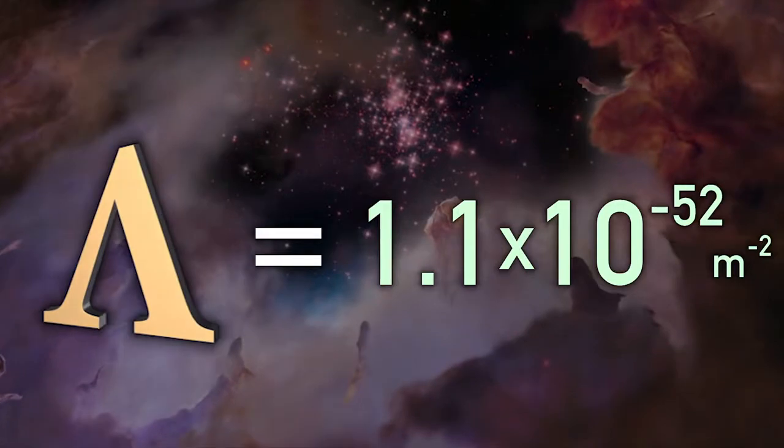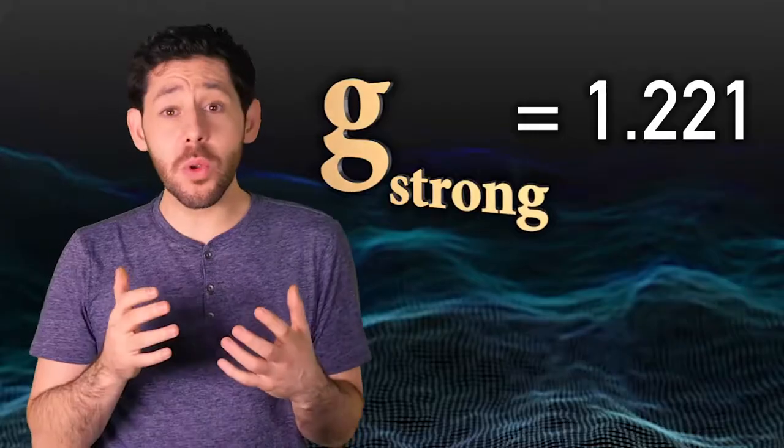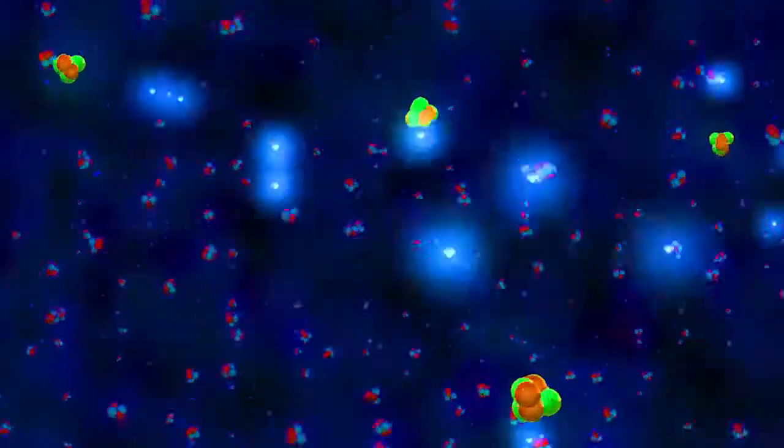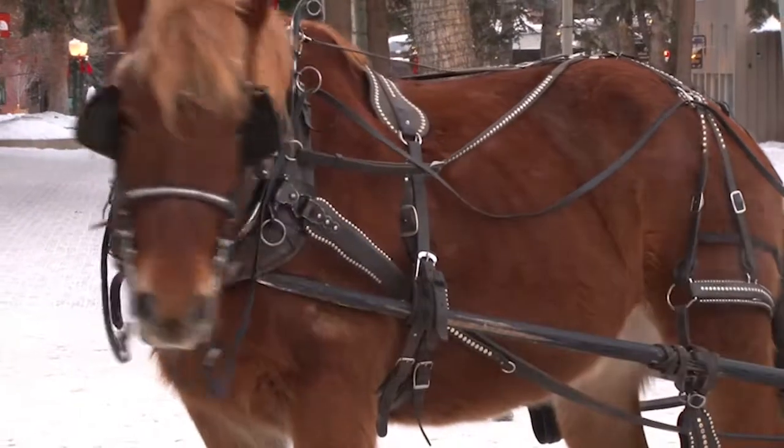This isn't the only number in physics that seems a little too perfect. The strength of the strong nuclear force, tweak that a little bit and chemistry is just gone. You don't have different kinds of elements. There's no nuclear fusion in stars. There's no oxygen to breathe. There's no carbon, so life wouldn't have existed in the first place.